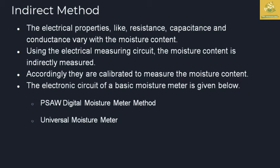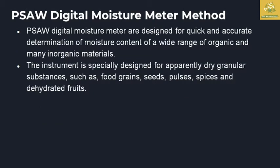We now move to indirect methods of moisture measurement. In indirect methods, the resistance capacity and conductance of the moisture content in the particle are used. Using an electric measuring circuit, the moisture content is indirectly measured. Instruments are calibrated to measure moisture content based on the produce's resistance capacity and conductance. The most commonly used electronic circuits for indirect moisture measurement are the PSAW digital moisture meter method and the universal moisture meter method.